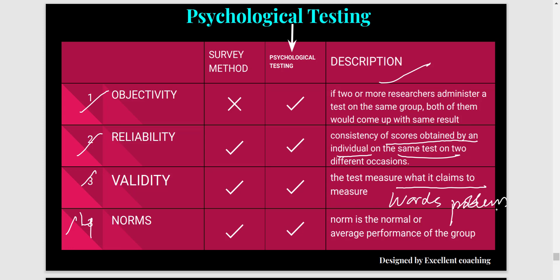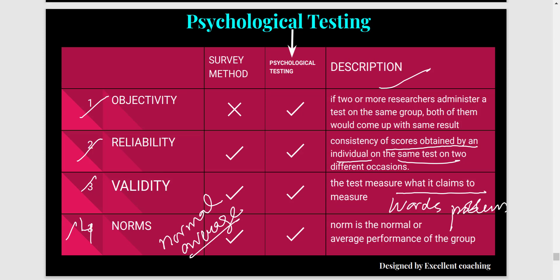Lastly, we have norms. Norms come from the word 'normal,' meaning average. When we assess a large number of people, there is an average score we get — that average score is called a norm, and it is used to compare the performance of different individuals. These are the four properties, or characteristics, of a good psychological test. In the next video we will cover types of tests.